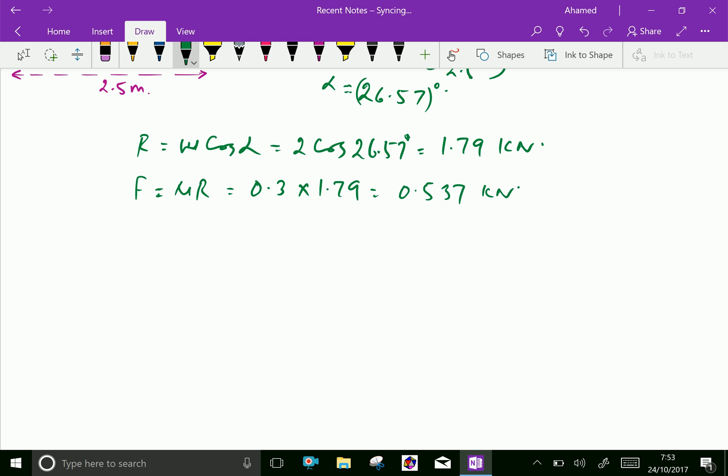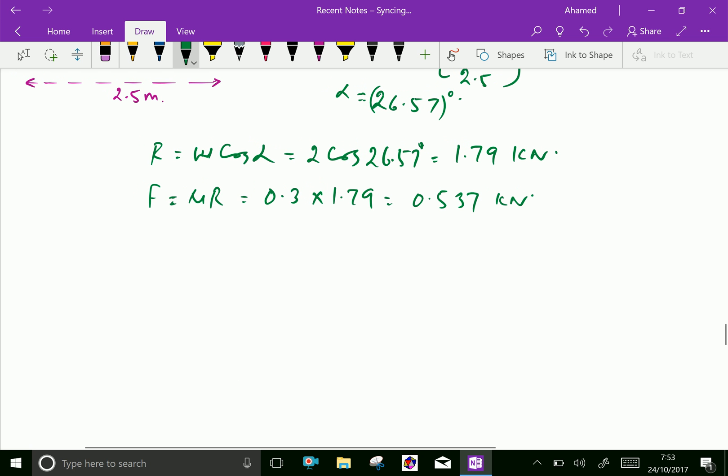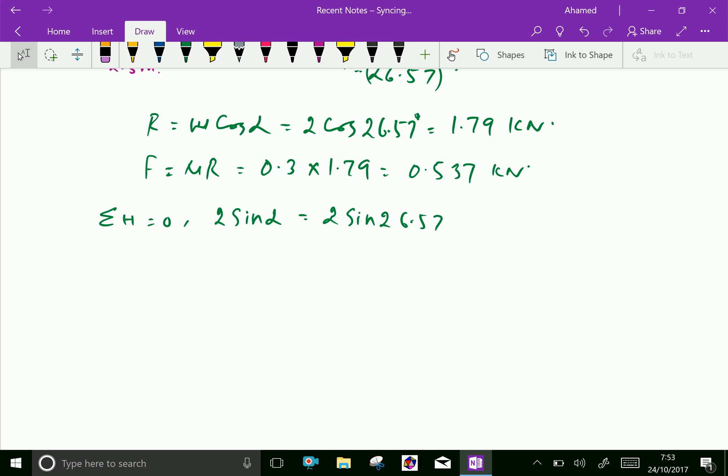Now resolving the forces along the plane, that means sigma H equals 0, we get 2 kilonewton into sin alpha. We calculate 2 into sin of 26.57 which gives the answer 2 into sin of 26.57 equals 0.895.